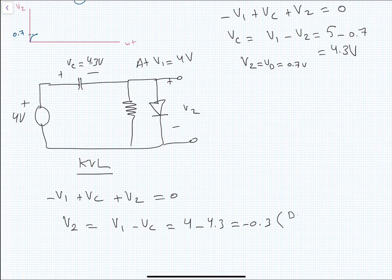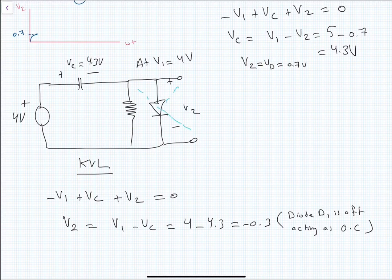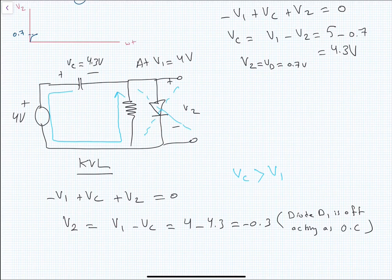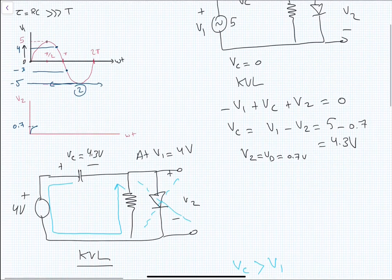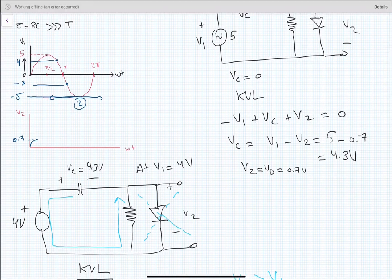This means that diode D1 is in the off mode, so it will be acting as an open circuit. Since VC is greater than V1, the current would flow in the reverse direction through the diode. So V2 equals −0.3 volts. On the output graph, for V1 = 4 volts, V2 is −0.3 volts.